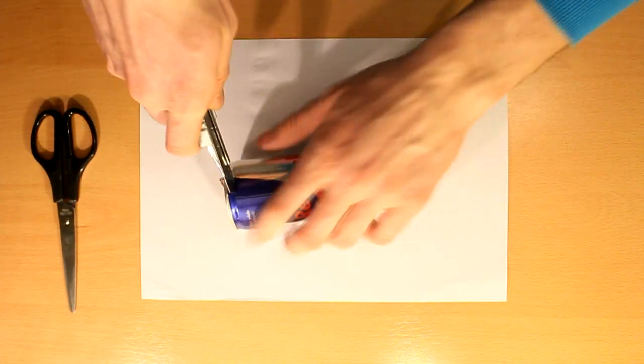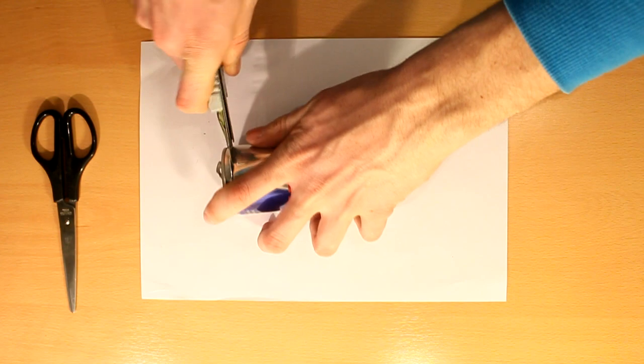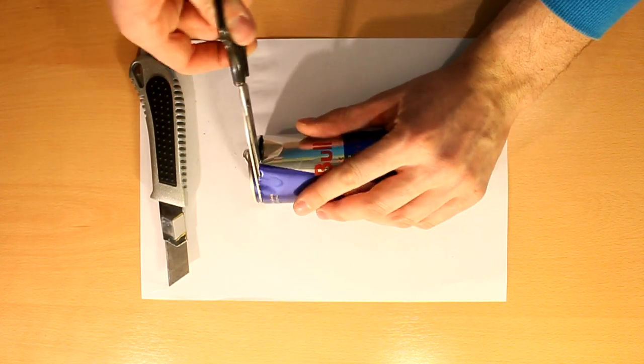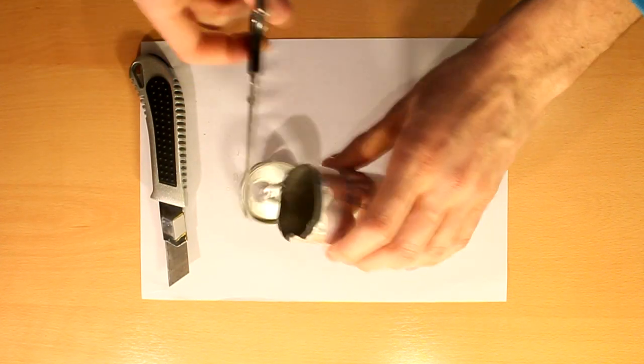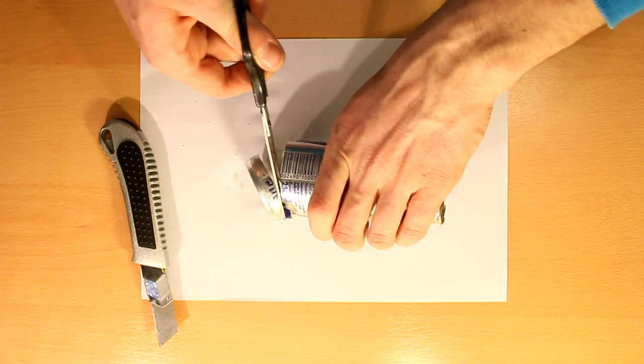Let's start by making the engine. You'll begin by cutting the upper part of the can using an x-acto and scissors. Do the same thing for the bottom part.